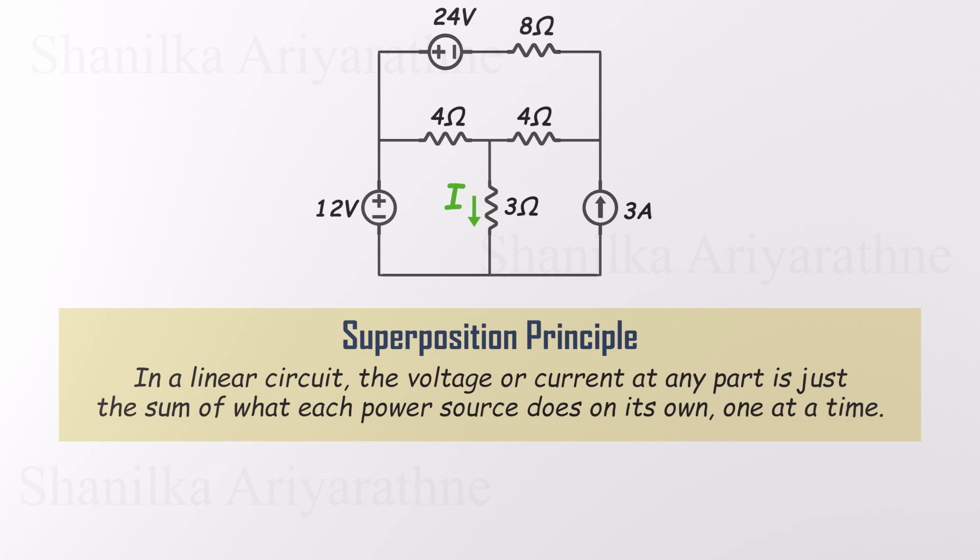The idea is actually pretty simple. The superposition theorem says this: if your circuit has more than one power source, don't try to solve everything at once. Instead take one power source at a time, figure out how it affects the circuit, and then just add up the results. And instead of dealing with the entire tangled mess of a circuit, we simplify it.